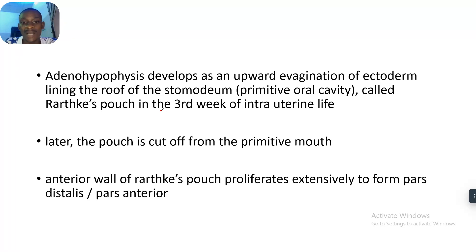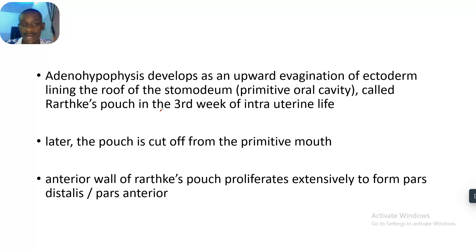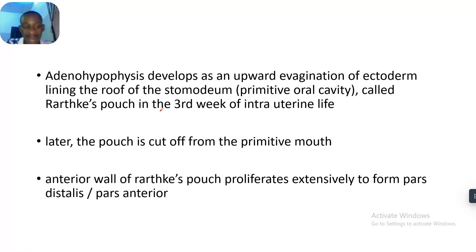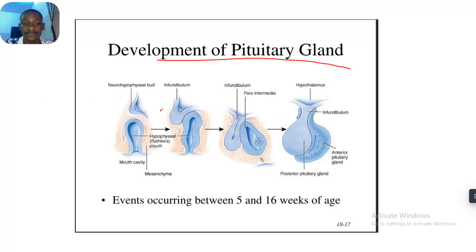The adenohypophysis develops as an upward evagination of the ectoderm lining the roof of the stomodeum — the primitive oral cavity. It is called Rathke's pouch in the third week of embryonic life. Later, the pouch cuts off from the primitive mouth, and the anterior wall of Rathke's pouch proliferates and extends to form the pars distalis, also known as the pars anterior, which is the adenohypophysis.